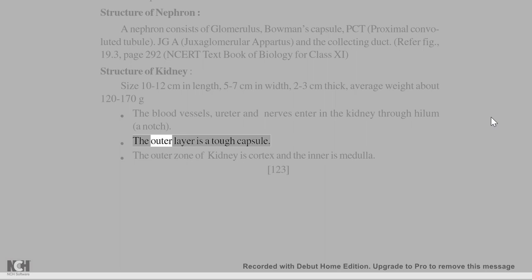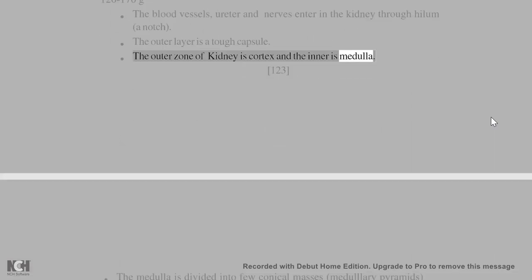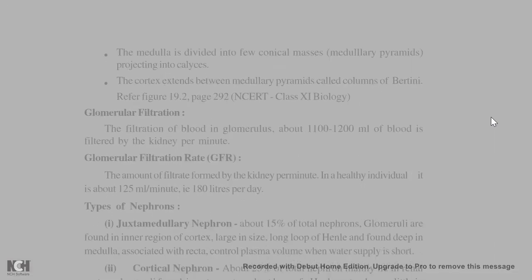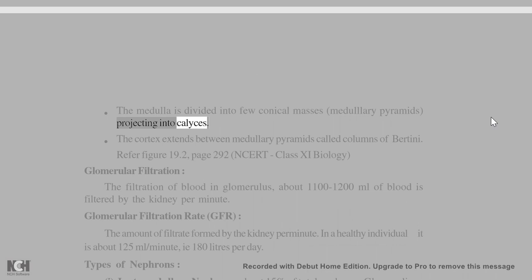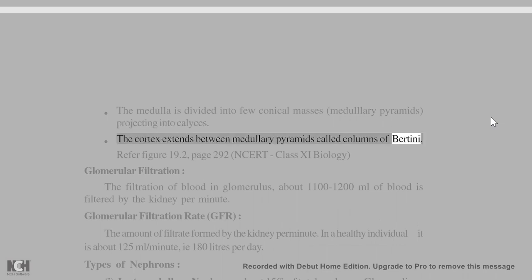The outer layer of the kidney is a tough capsule. The outer zone is the cortex and the inner zone is the medulla. The medulla is divided into a few conical masses called medullary pyramids, projecting into calyces. The cortex extends between medullary pyramids, called columns of Bertini.